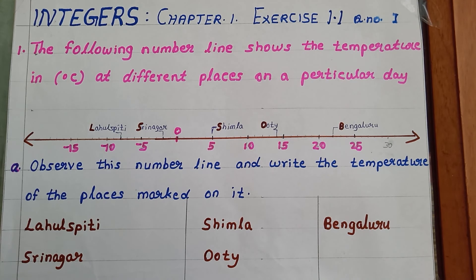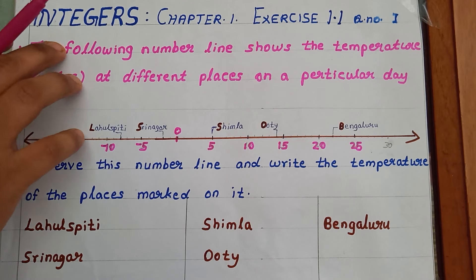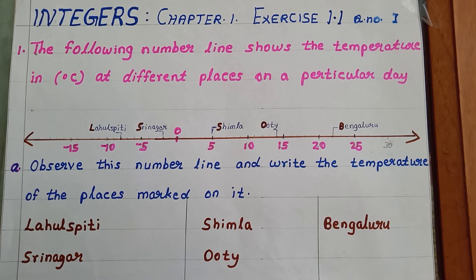I will give some links in the description box. Please go through those links before studying this chapter. Integers means it is a collection of numbers — collection of positive numbers, negative numbers and zero. But these numbers should not be a fraction. That is the meaning of Integers.